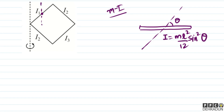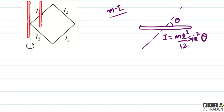तो मैं parallel axis theorem लगाकर इस axis के about भी moment of inertia निकाल सकता हूँ, क्योंकि ये हमारा ICOM होगा और ये अगली axis होगी। इनके बीच का distance हम निकाल सकते हैं। यहाँ clearly देख रहे हैं कि यह angle 45 degree होगा।